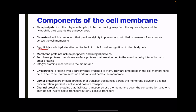Other membrane proteins include peripheral proteins and integral proteins. Peripheral proteins are membrane surface proteins attached to the membrane by interaction with other proteins. Integral proteins are inserted into the membrane and are part of the whole membrane. Glycoproteins — a carbohydrate attached to a protein — are embedded into the membrane to help in cell-cell communication and transport across the membrane.